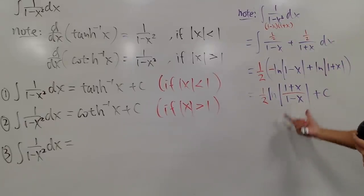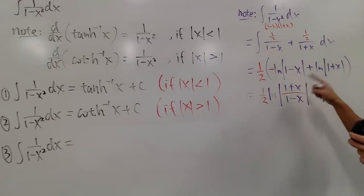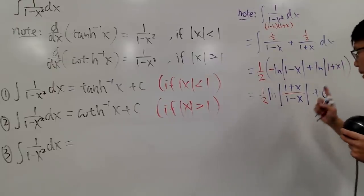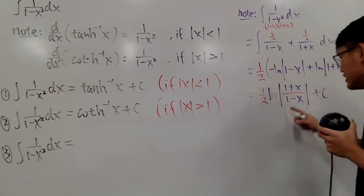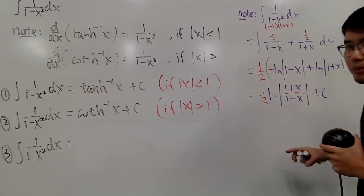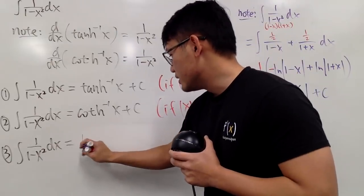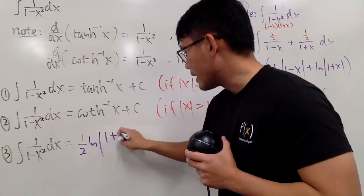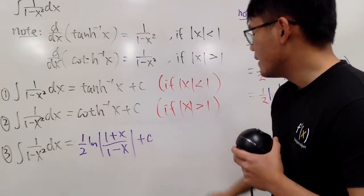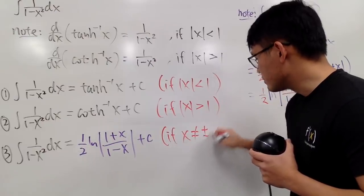Thanks to the absolute value, x can be anything except 1 or negative 1, because if x equals 1 you get a 0 in the denominator, and if x equals negative 1 you get ln of 0 — both undefined. So the final answer is one-half times ln of the absolute value of 1 plus x over 1 minus x, plus C, valid as long as x is not equal to plus or minus 1.